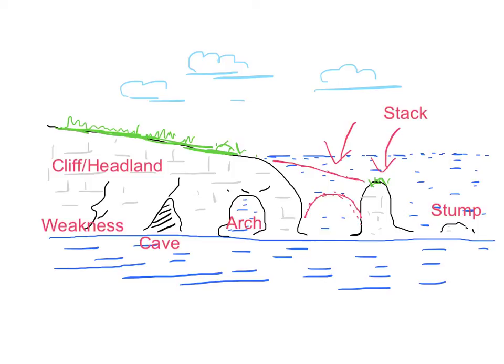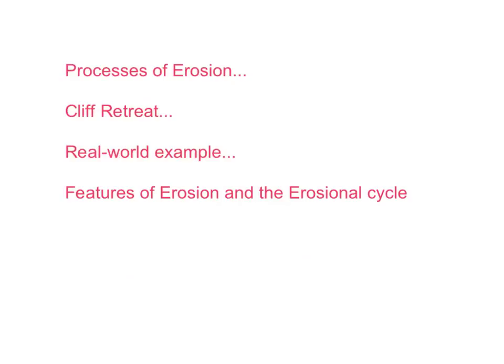We've started off by looking at the processes of erosion — processes being things that happen — and those processes create features. One of the key effects is that coastal cliffs retreat back in towards the mainland. We then looked at a real-world example at Old Harry Rocks in South Dorset, and examined those features more theoretically using the diagram. We can see that the features form a continuum over time as a coastline is eroded, but they can also be seen as a snapshot — all present at the same time, as we saw at Old Harry.